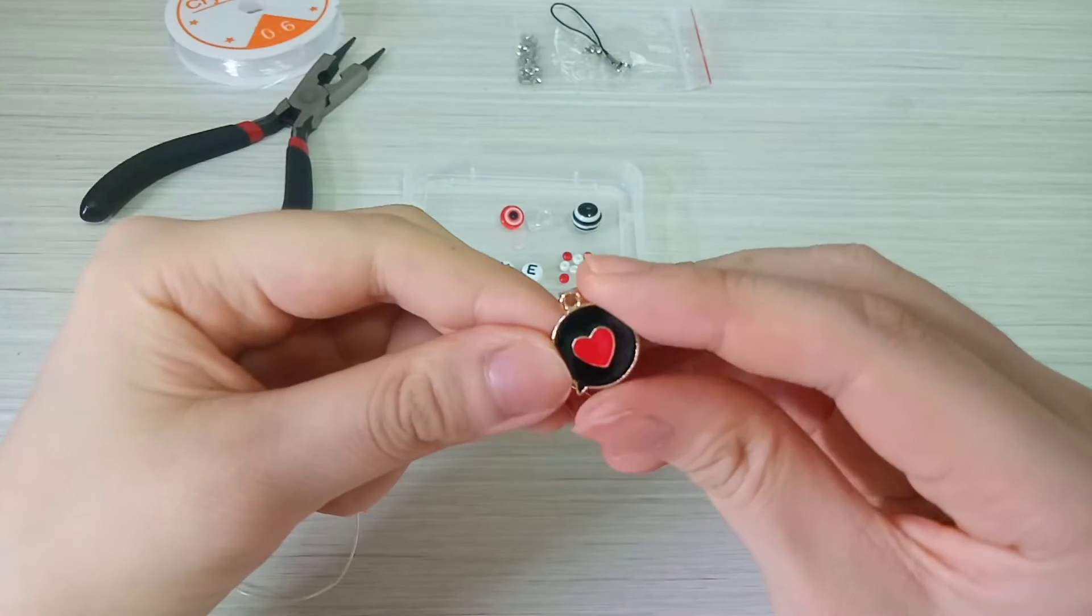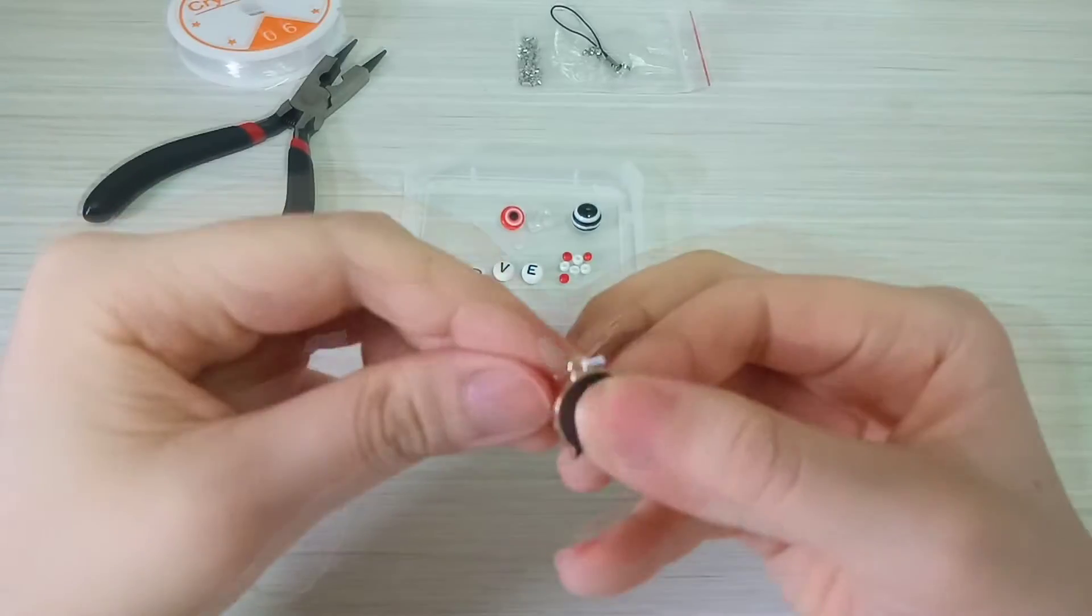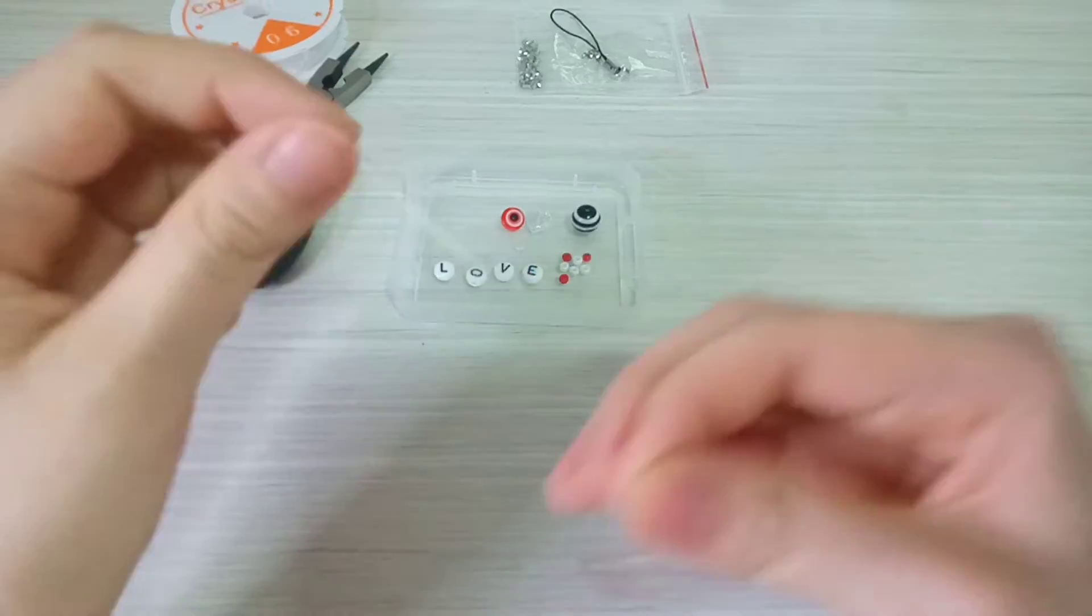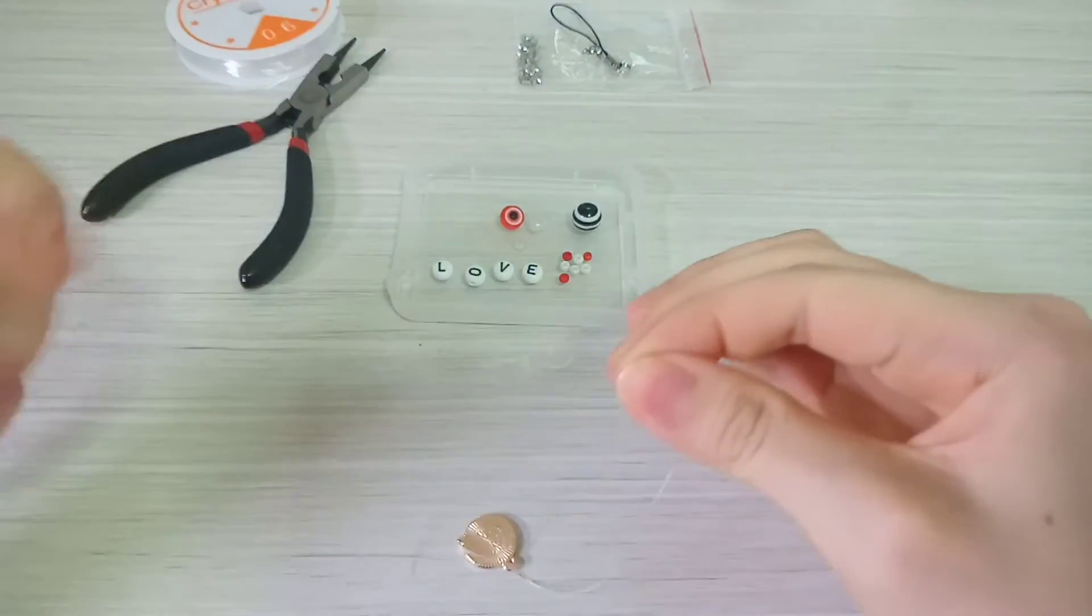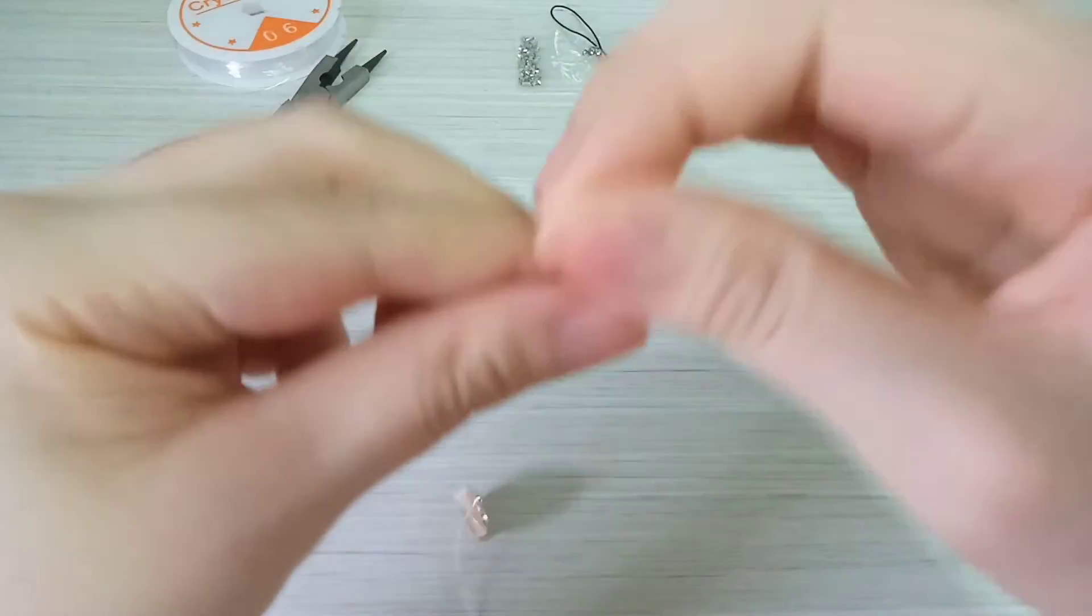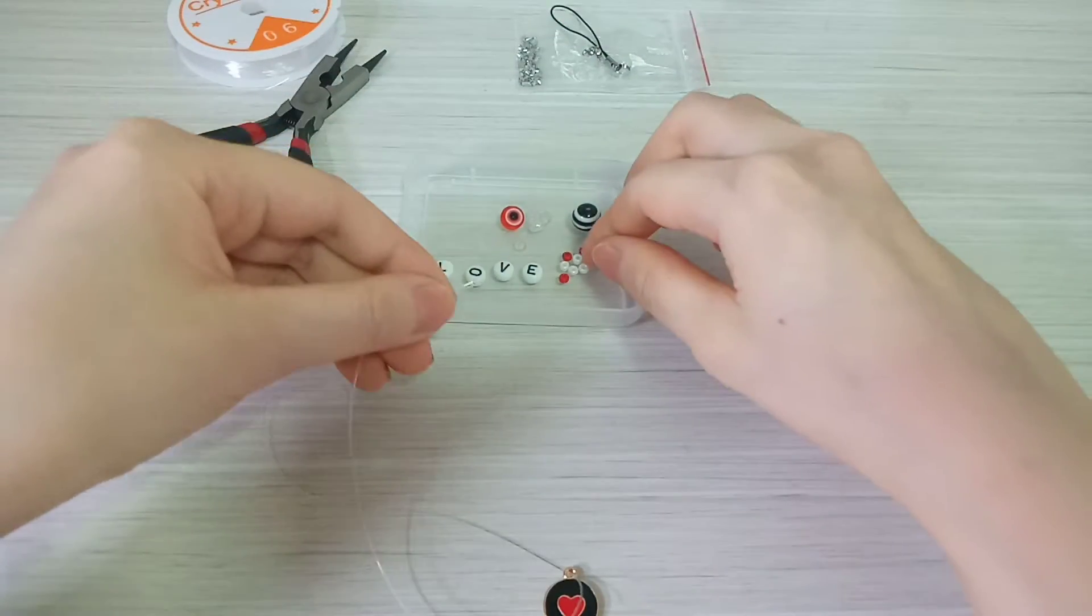For the bottom part of my phone strap, I decided to use this cute heart charm. I'm putting it through the string, then taking both ends of the string and joining them together.